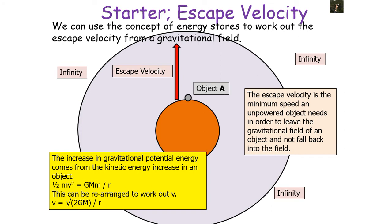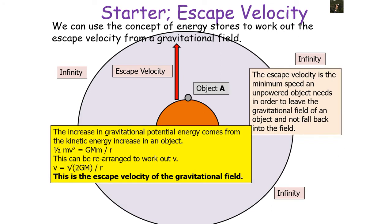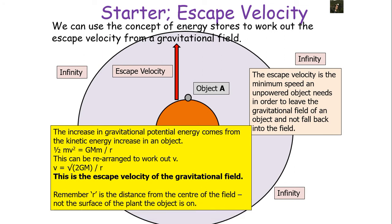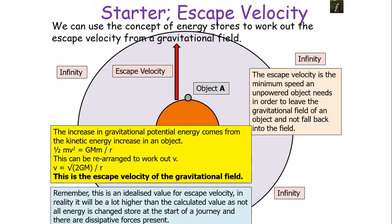We assume only the minimum kinetic energy is needed — no excess energy after escaping. We also assume all kinetic energy is given at the start on take-off, and there are no dissipative forces like air resistance. Rearranging gives v = √(2GM/r). Note there is no small m — the mass of the escaping object — in this equation; it cancels out. So the escape velocity is the same regardless of the mass of the escaping object: the same for a tennis ball as for a rocket ship.